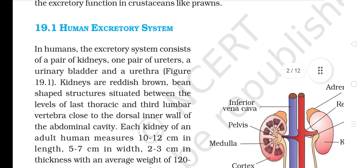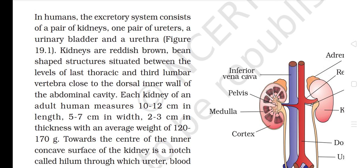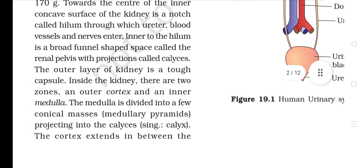Section 19.1: Human Excretory System. In humans, the excretory system consists of a pair of kidneys, one pair of ureters, a urinary bladder, and a urethra. Kidneys are reddish-brown, bean-shaped structures situated between the levels of the last thoracic and third lumbar vertebra, close to the dorsal inner wall of the abdominal cavity. An adult human kidney measures 10–12 cm in length, 5–7 cm in width, and 2–3 cm in thickness, with an average weight of 120–170 grams. Towards the center of the inner concave surface is a notch called the hilum, through which the ureter, blood vessels, and nerves enter.